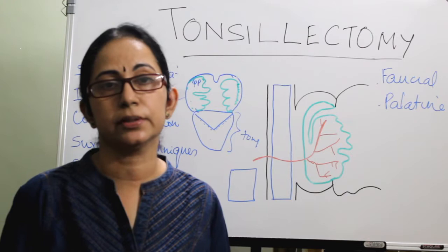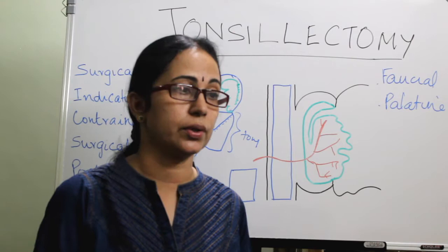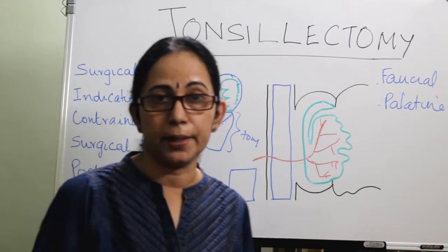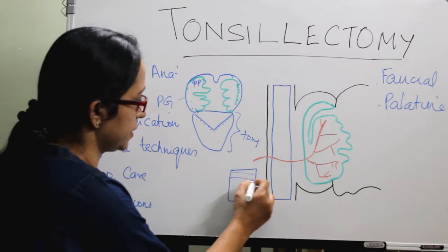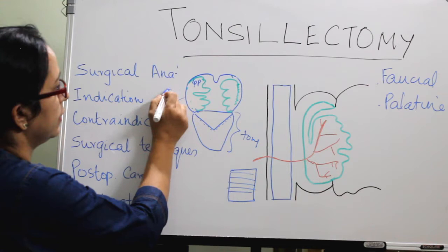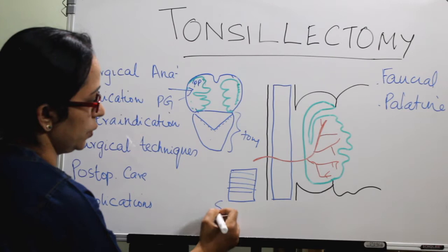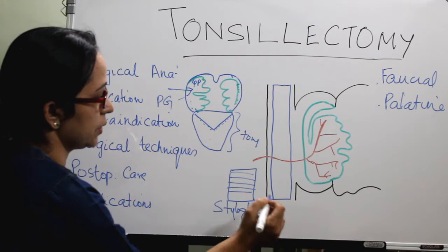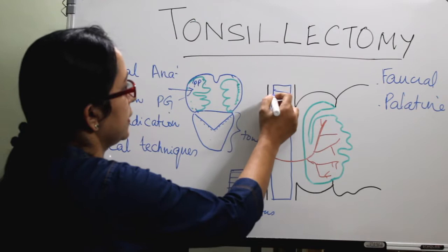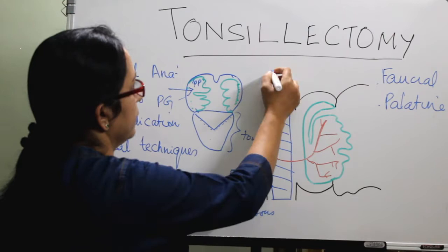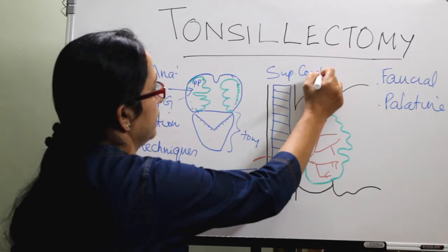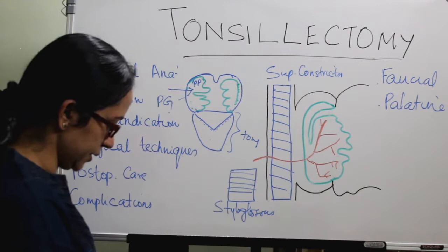The development of the tonsil is from the second pharyngeal pouch. It is lined by non-keratinizing stratified squamous epithelium. It lies on a tonsillar bed which is mainly formed by two muscles: the styloglossus and the superior constrictor. The tonsillar bed also involves the pharyngeal basilar fascia and the buccopharyngeal fascia. The bed of the tonsil — specifically the styloglossus muscle — is a usual MCQ topic.